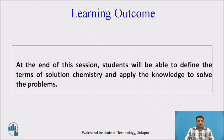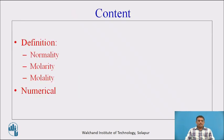This is the learning outcome for today's session. At the end of this session, students will be able to define the terms of solution chemistry and apply the knowledge to solve the problems. This is the content we are going to learn: first, the definitions of normality, molarity, and molality, and then how to solve numericals to find out the normality, molarity, and molality of a given example.